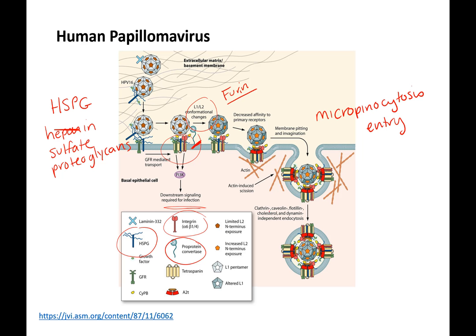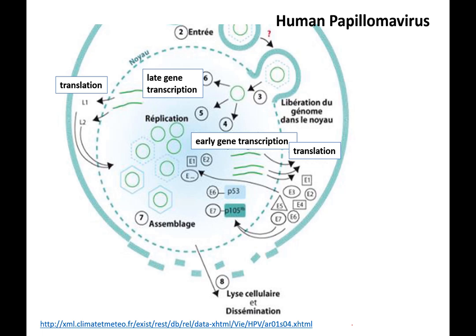The vesicle is taken to the nucleus. HPV gets into the nucleus — the circles represent the DNA genome. In the nucleus we have early gene transcription, late gene transcription, and replication of the viral genome, but this happens in a manner dependent on the differentiation of the cell.